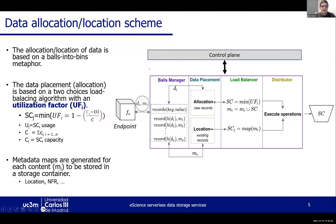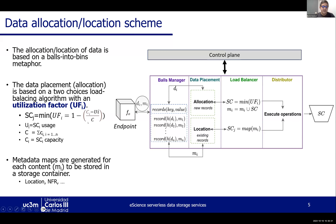The data containers use a data location scheme based on an utilization factor, where the container to store the data is selected based on a factor calculated by obtaining the usage of the container, and we normalize it to select the container with minimum utilization. We generate metadata maps that keep control over the data across all the data containers.